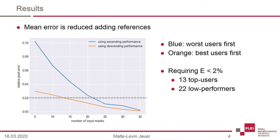For example, using masks from either 13 top users, shown in orange, or 22 low-performing users, shown in blue, yield the same error below 2%. So, determining the performance of users is essential already in the process of crowdsourcing to improve segmentation quality while lowering the necessary number of contributions.